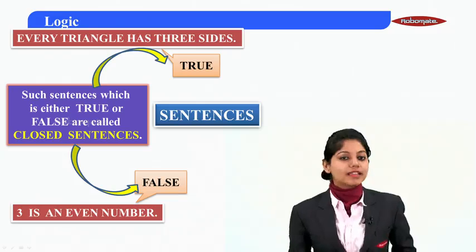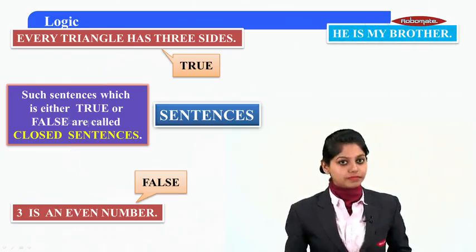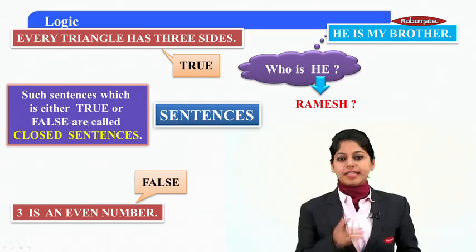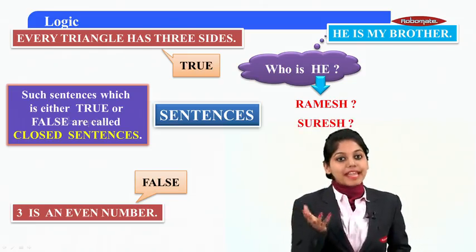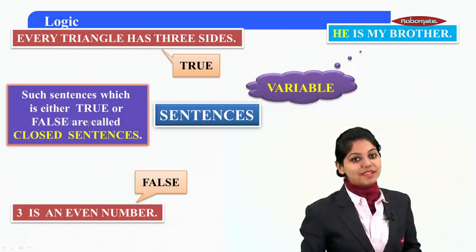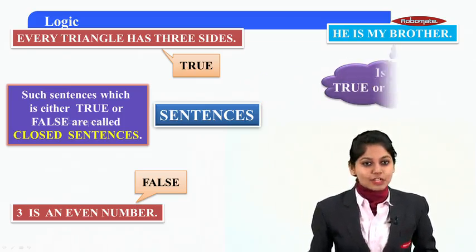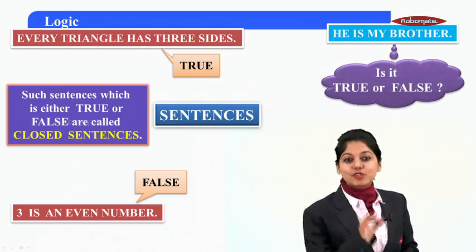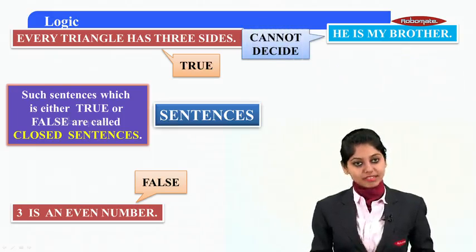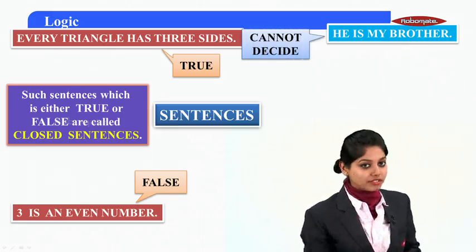Now let's look at another example: 'He is my brother.' Who is he? He can be Ramesh, he can be Suresh, or he can be anyone. That simply means 'he' is a variable — he can change its value. So if I ask you whether this sentence is true or false, you absolutely cannot decide, because you do not know who 'he' refers to.